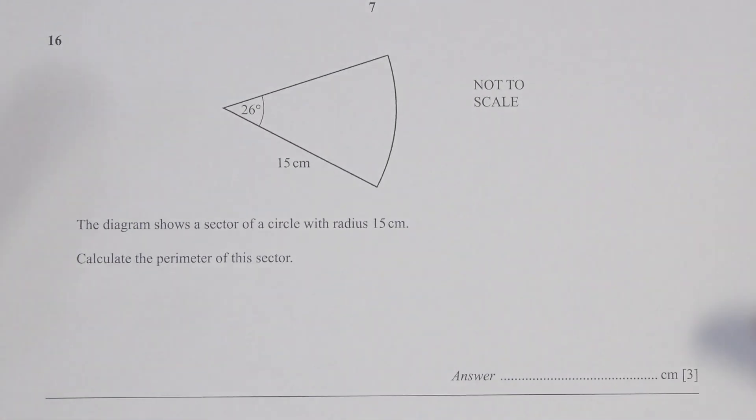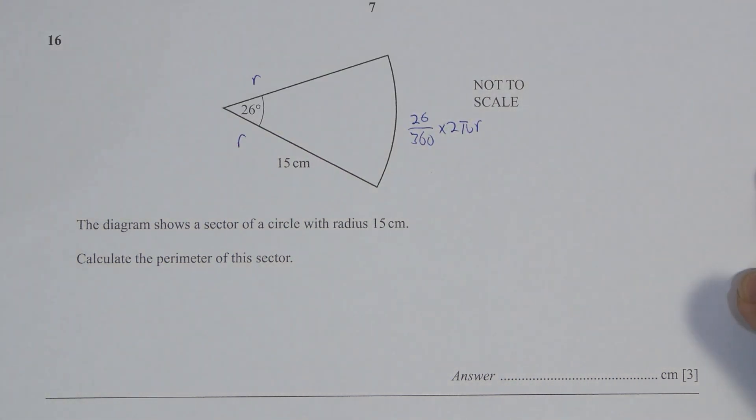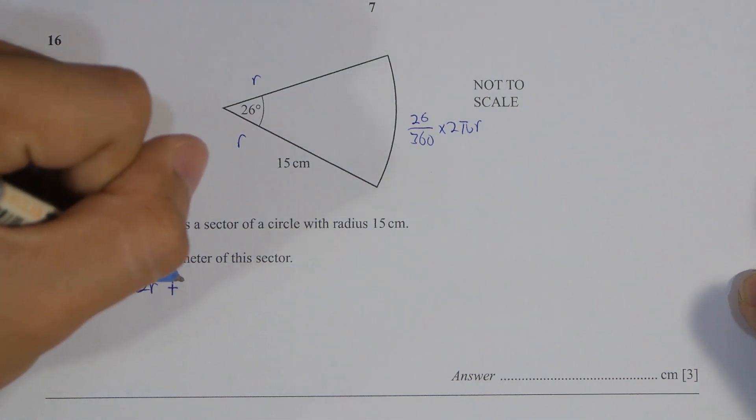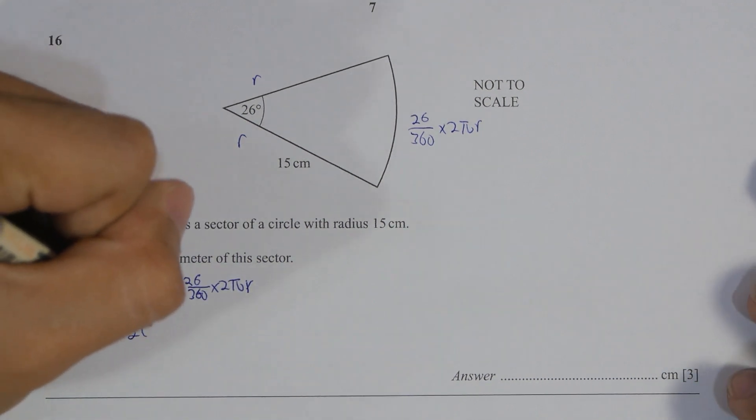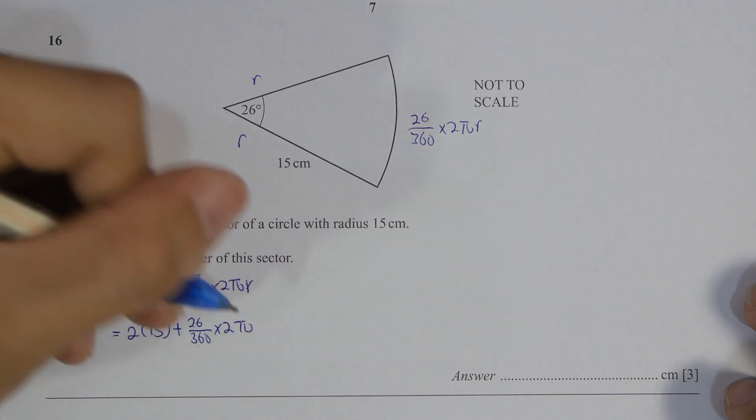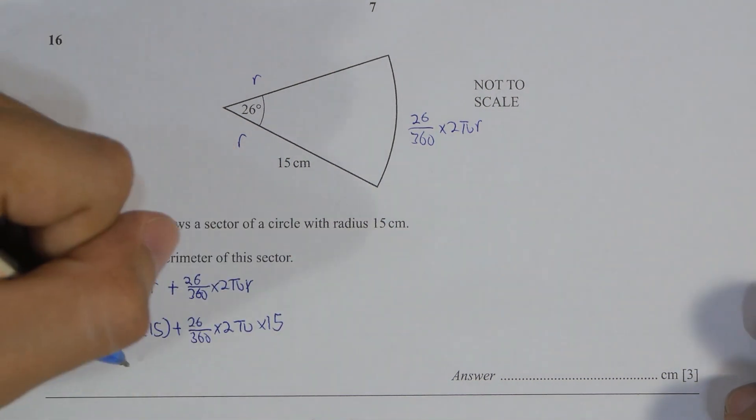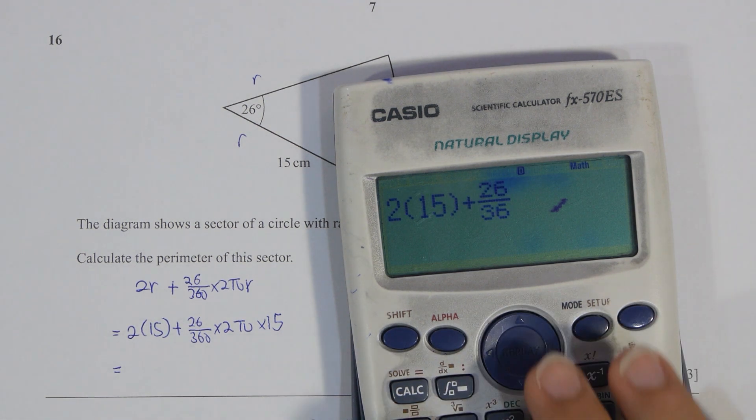Question 16, key things here is that it is for a particular sector only. So the formula that we are using is 2 pi r, you are required to multiply 26 over 360. Another keyword here is the perimeter, hence you are required to add 2r into it. So after the calculation, you will get 36.81 cm.